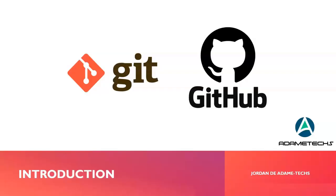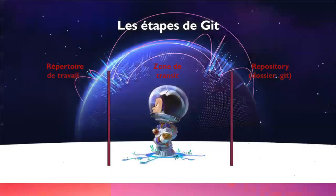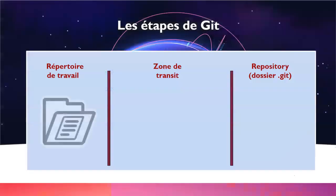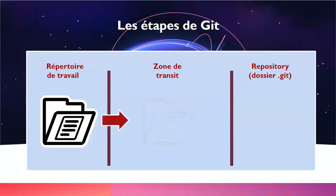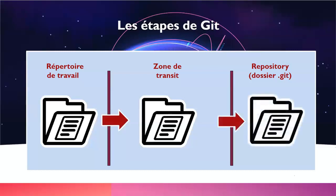You have to know the three local states of files managed by Git: the working directory, the staging area, and the Git repository or commit history. The working directory contains all the files and folders of your application that may be tracked or not by Git. Git knows about all its files. On the other side, we have the Git repository or commit history that contains all the modifications that have been committed or recorded in the Git repository.